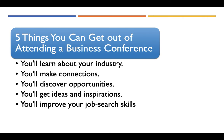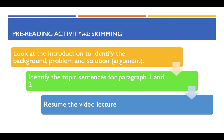The prediction practice helped us create a map like this in our mind. Before we read the article carefully, we now have a general idea of what it is about. Let's move on to the second pre-reading activity, which is skimming. Please look at the introduction to identify the three elements — background, problem, and solution, or what we call an argument. Then look at paragraph one and paragraph two to identify the topic sentences. When you are done with these two steps, come back to the video lecture to listen to my explanation. Please pause the video lecture now.